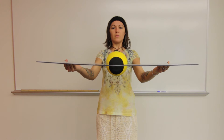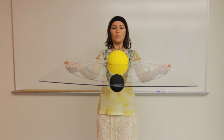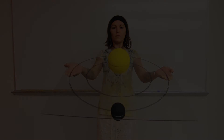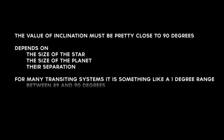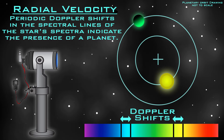Starting at ninety degrees and slowly decreasing the inclination, note the value when the planet just barely still eclipses or appears to touch the star. The value of inclination must be pretty close to ninety degrees and depends on the size of the star, the size of the planet, and their separation. For many transiting systems, it is something like a one-degree range between eighty-nine degrees and ninety degrees, so only a small percentage of extrasolar planets can be detected by the transit method.